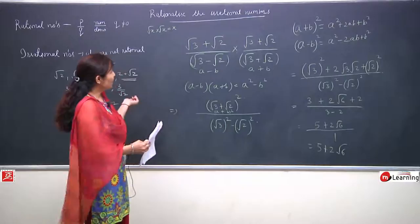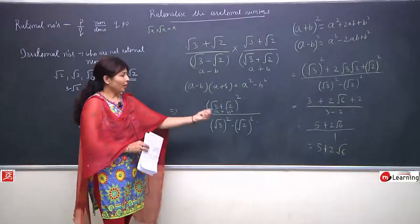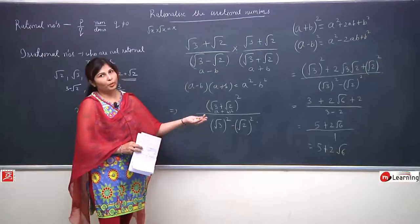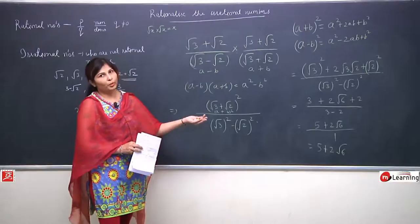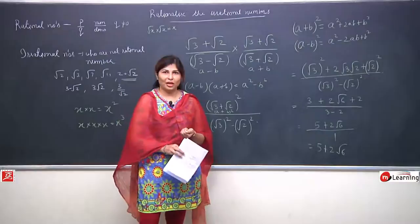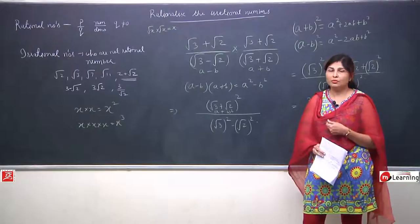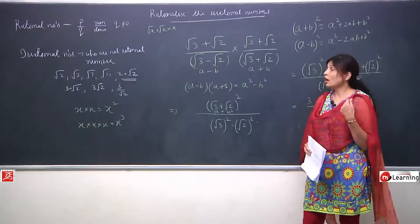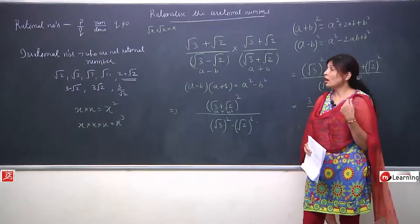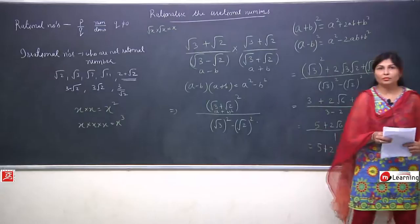So friends, you have seen how by rationalizing we converted a big complex question into something very small. Whatever irrational part was in the denominator, we removed it and got a simple numeric part. That may be rational or irrational, but it is removed from the denominator. This is all about rationalization of irrational numbers. This is a very important and useful topic for number systems and real numbers. In the next class we will study some harder questions based on rationalization.